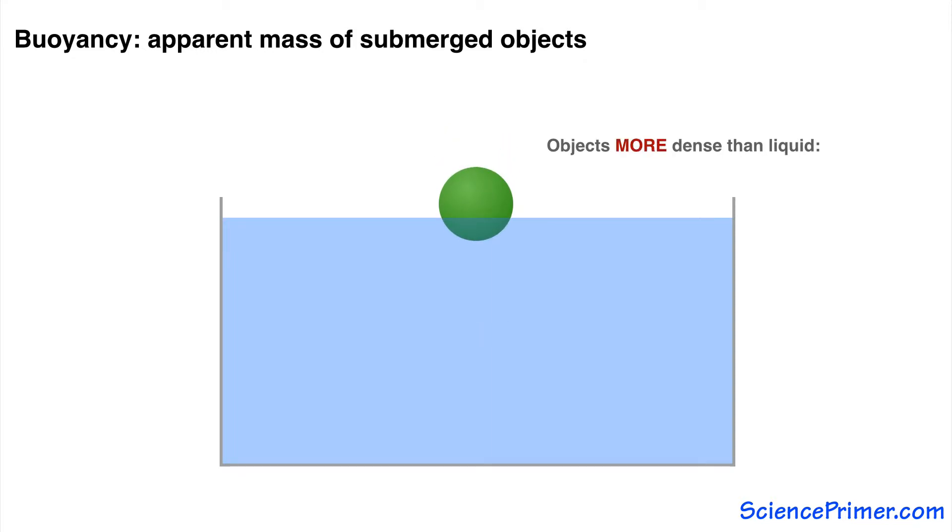If the object is more dense than the liquid, it sinks. But buoyancy force will still affect the object by reducing its apparent mass.